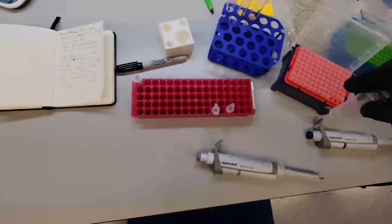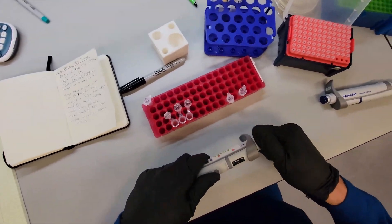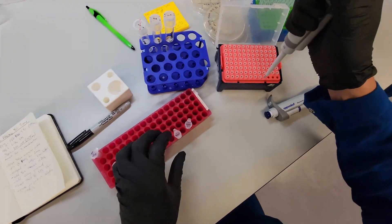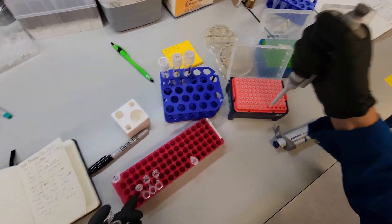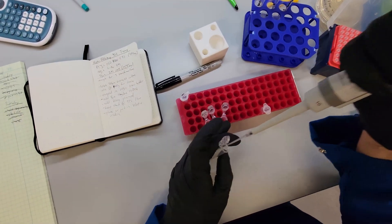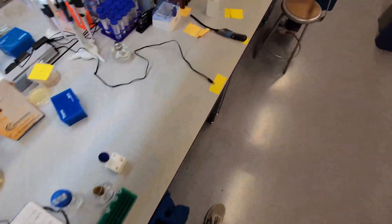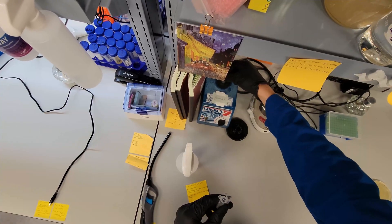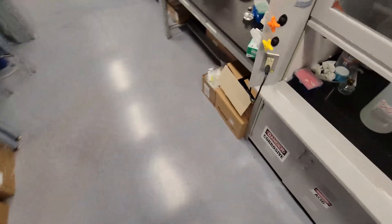And then our plasmid is at a concentration of 247 nanograms per microliter. So I'll use three microliters of the plasmid. That's a little bit more than 600 nanograms, but it's fine. So there we go. So we'll put this at 39 Celsius for one hour and then come back and put them in selective media.